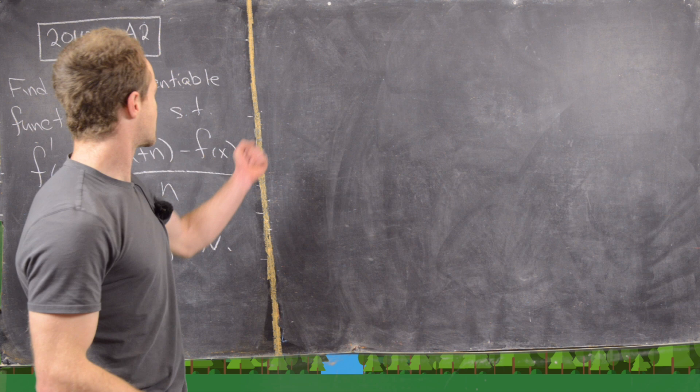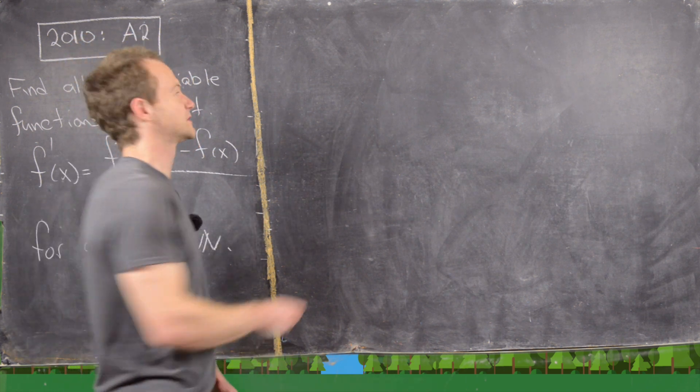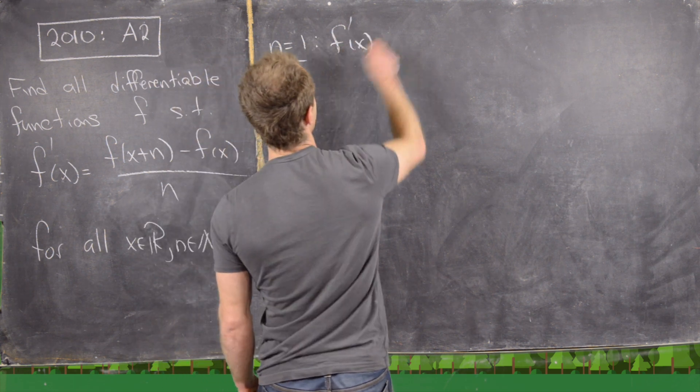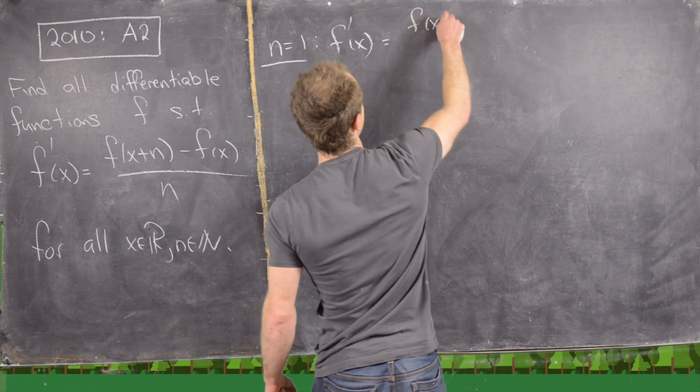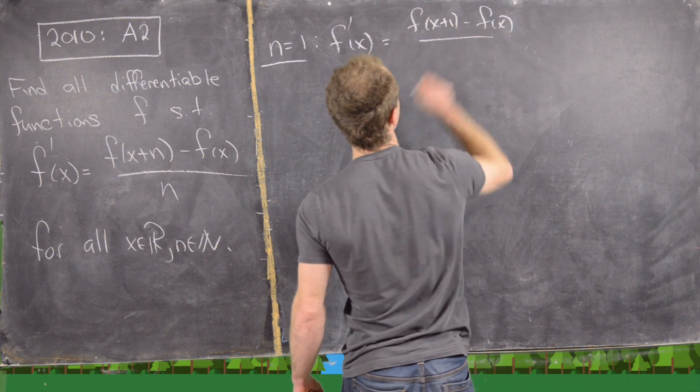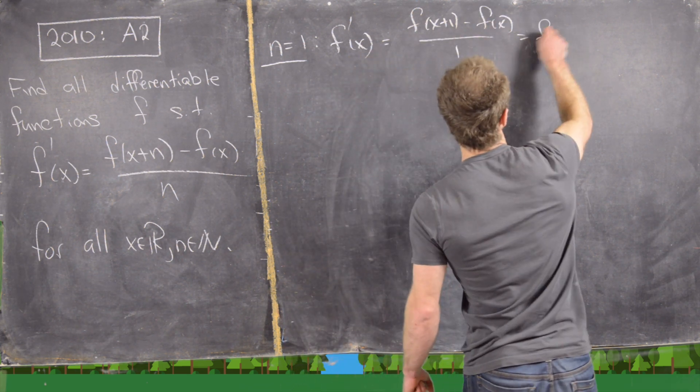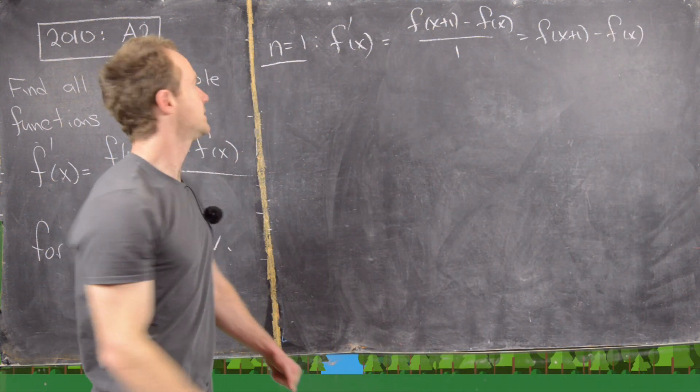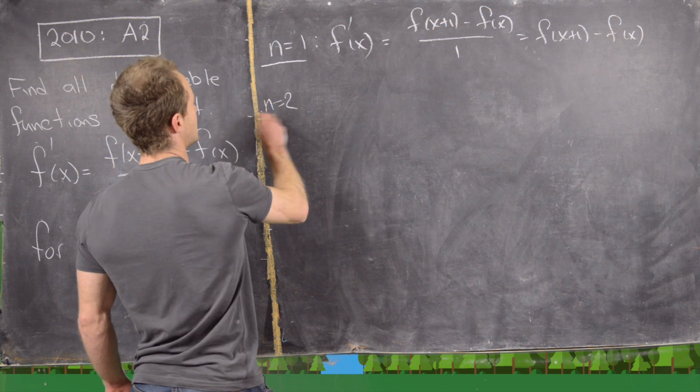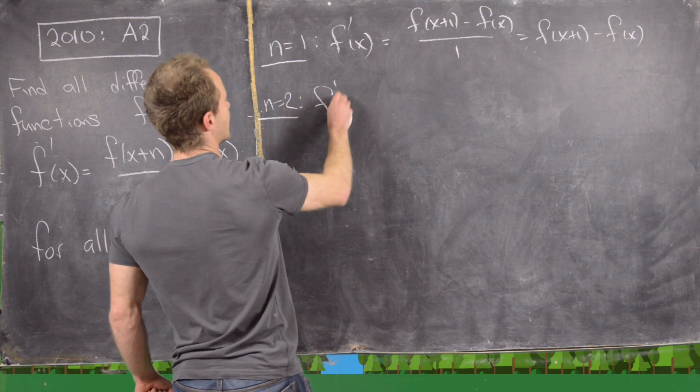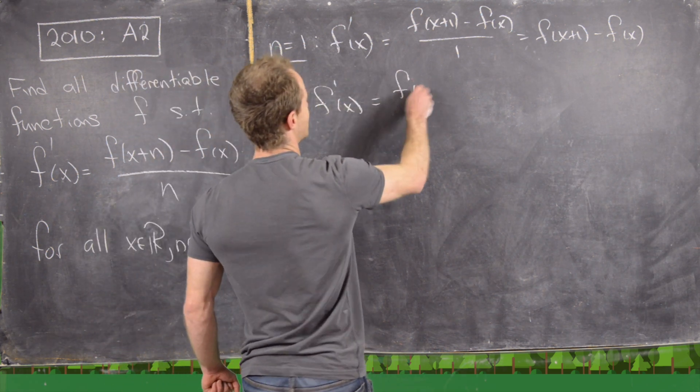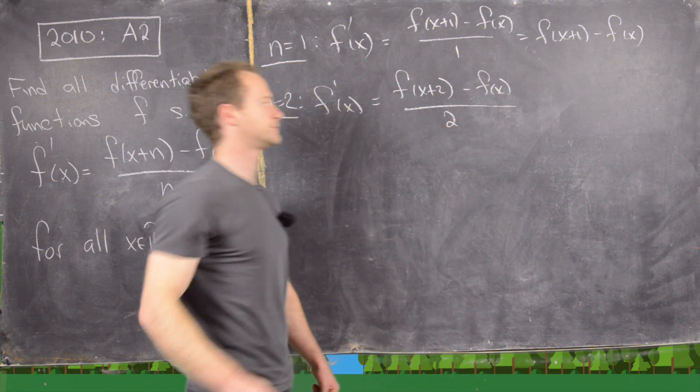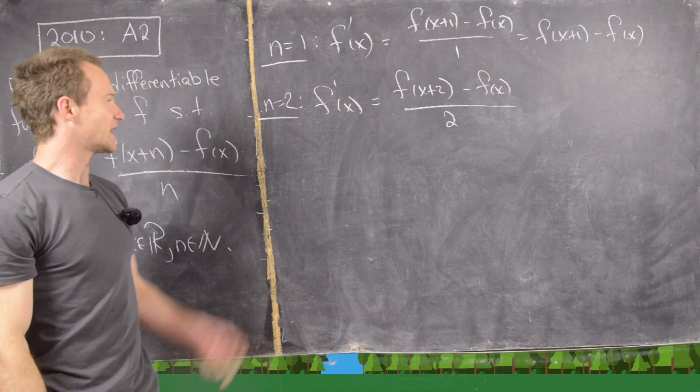Now I want to just look at a couple of examples first to get our brains going. If we take n equals 1, that means we get this formula f'(x) equals f(x+1) minus f(x) over 1. In other words, it's f(x+1) minus f(x). Now notice if we have n equals 2, we get f'(x) equals f(x+2) minus f(x) over 2. And actually I'm going to stop there.